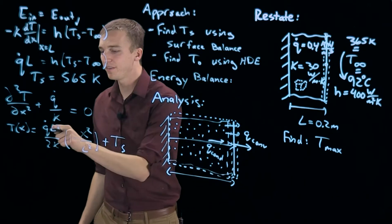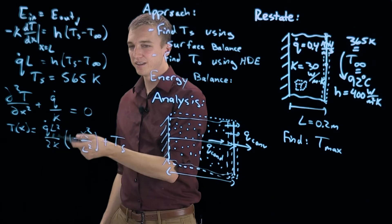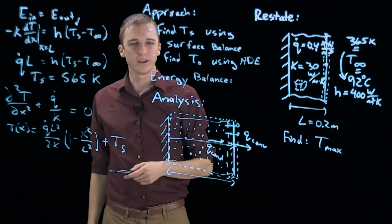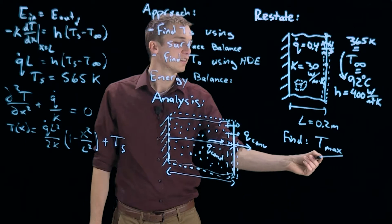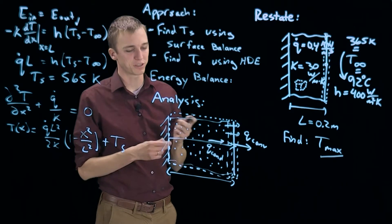So we actually know everything here. We know q dot, we know l squared, we know k, we know what the number 2 is, we know l. What do we do with x? Well we are trying to find T max. The question is where is the maximum temperature going to occur?